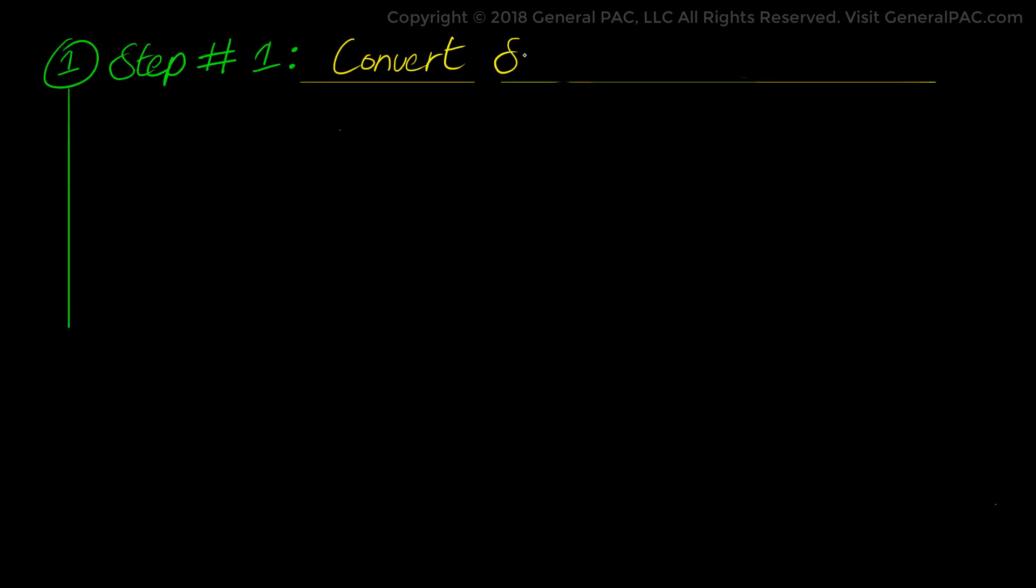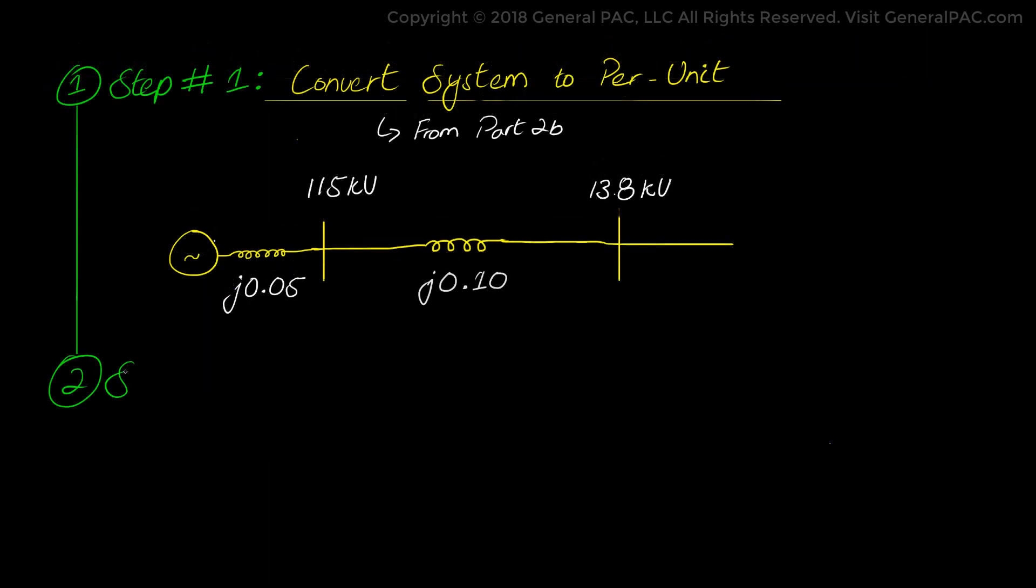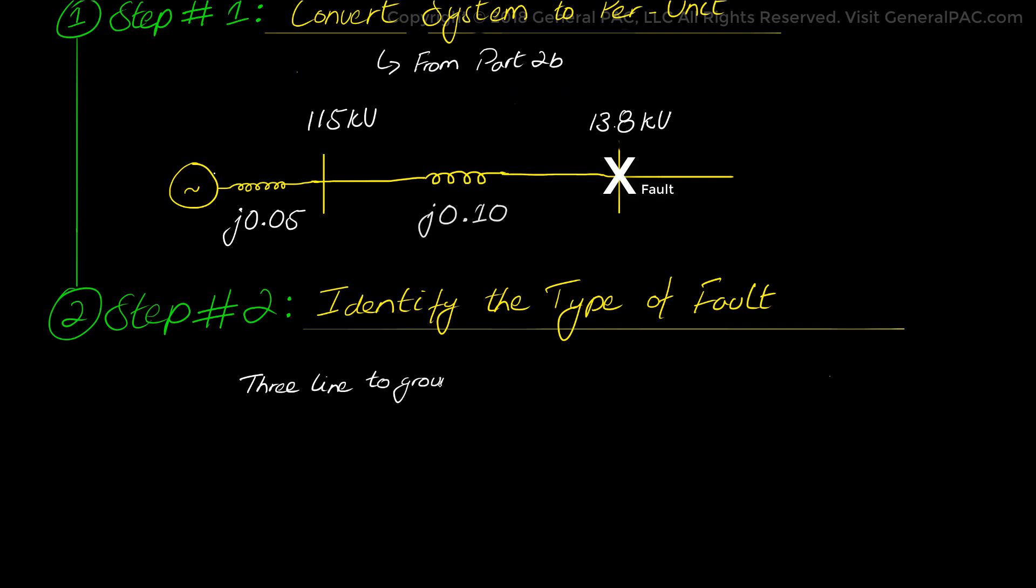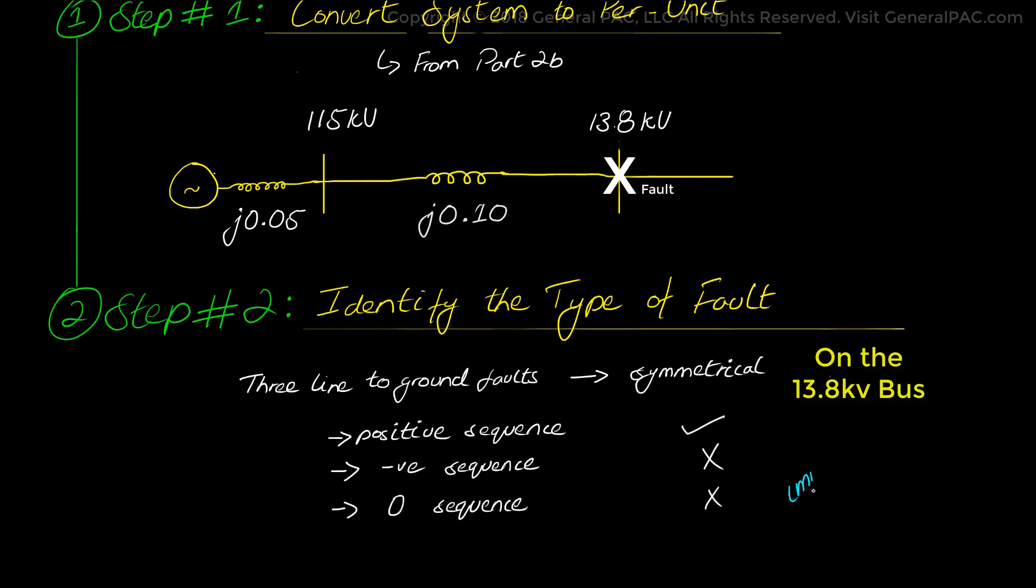Step 1 of our calculations asks us to convert the system into per unit values and that's exactly what we did in part 2B of our series. Here we draw the same networks again. Next we move to step number 2 which will ask us to identify the type of fault involved. As mentioned before, we have a 3-line to ground fault which is a symmetrical fault type meaning it's a balanced fault. Now this type of fault only produces positive sequence quantities and does not produce any negative or zero sequence quantities which are current and voltage values. So this is very important for us to keep in mind.